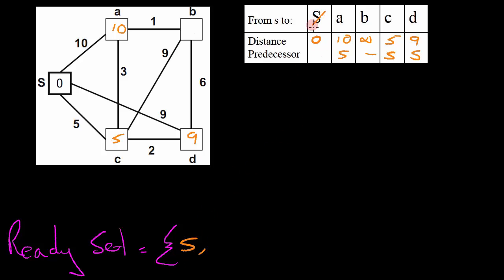S is already in the ReadySet, so we look at the remaining nodes with the shortest distance. We see that C has a distance of 5, and we now update neighboring nodes with new distances and predecessor values starting at node C. Node C has a neighboring node A. Taking C's distance value of 5 and adding 3 to it, we see that 8 is less than 10, so we update the distance value for A to 8 and A's predecessor changes to C. C also has a neighboring node B. The distance from C to B is 5 plus 9, giving a distance value of 14. So the value of B is updated to 14 and B's predecessor is changed to C.